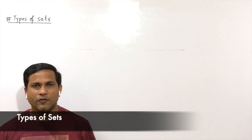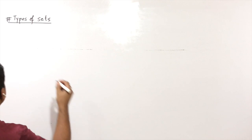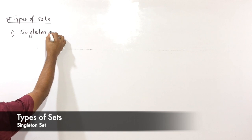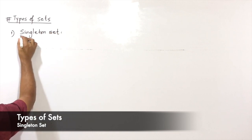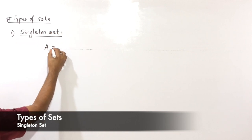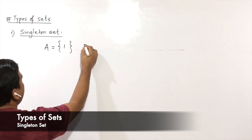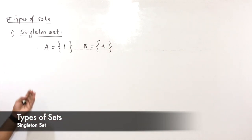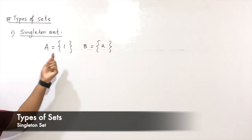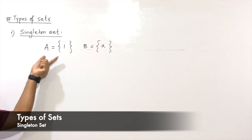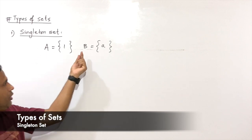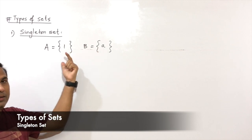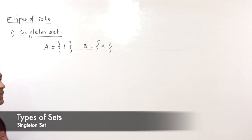Today we will start with types of sets. The first type is the singleton set. A set which has only one element is said to be a singleton set. If you observe set A, you have one element, so we can say that it is a singleton set. Similarly, if you observe set B, it has a single element, then we can say that it is also a singleton set.